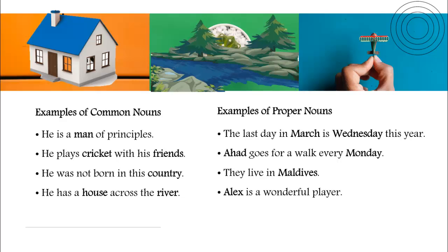Let's see the examples of proper nouns. 'The last day in March is Wednesday this year.' March is the name of a specific month and so is the word Wednesday — both of them are proper nouns. 'Ahad goes for a walk every Monday.' Ahad is a name, and we can't use it for all men because it's not a generic name. So the words Ahad and Monday are proper nouns.